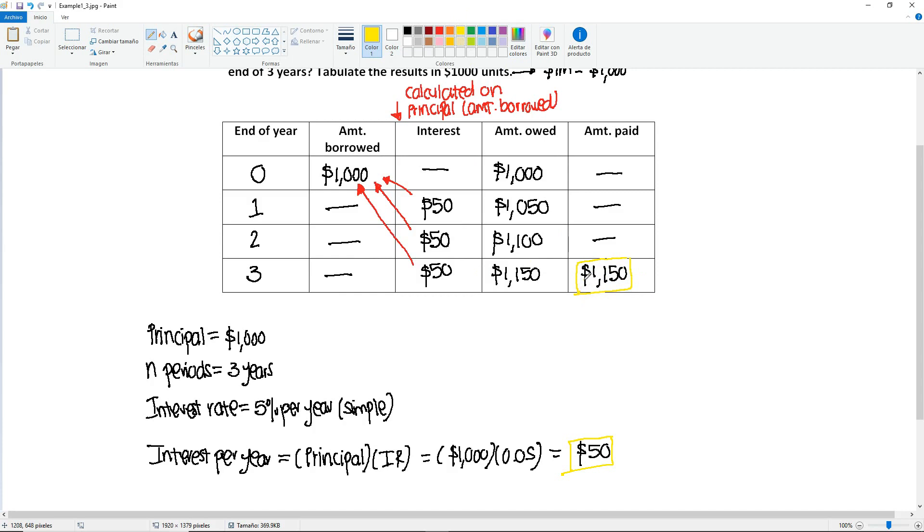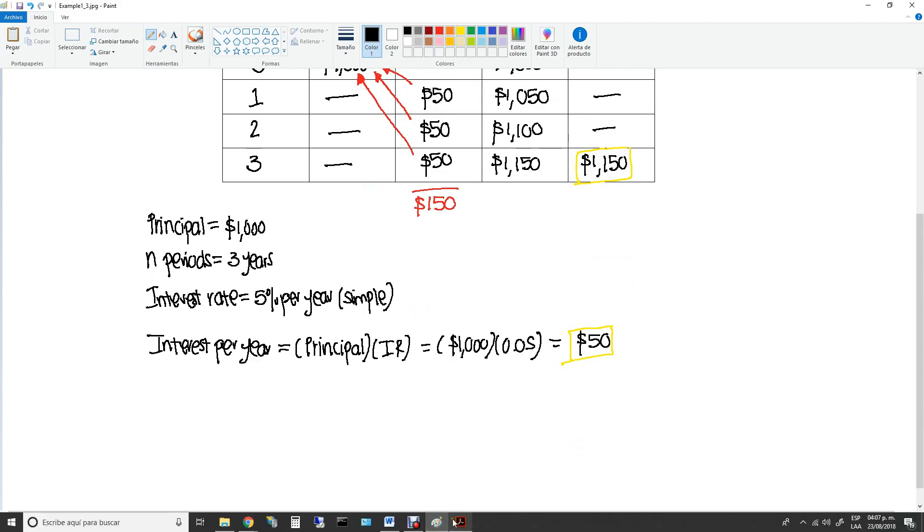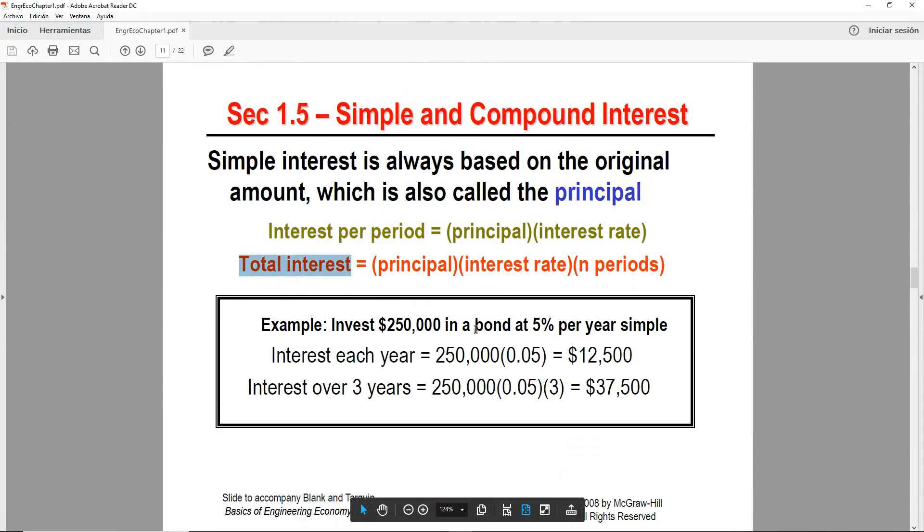So this is how much they will end up paying at the end. Now, here we did it year by year, because it was easy. We only had three years. But let's say if I asked you to calculate the total interest for all three years. In this case, we have 50 plus 50 plus 50. So we have a total of $150 accumulated. If you don't want to do it year by year, or if you have a lot of years, we can use a shortcut using this formula right here to calculate the total interest.